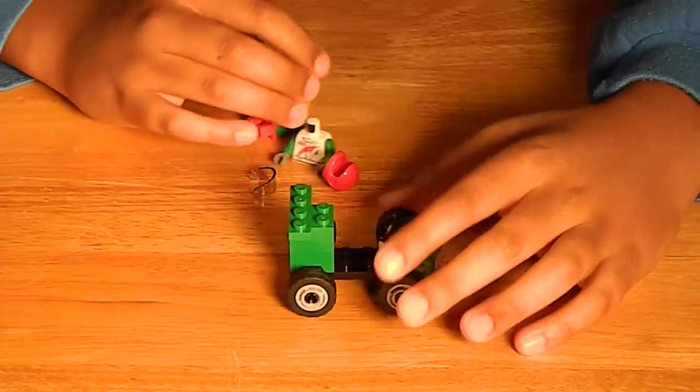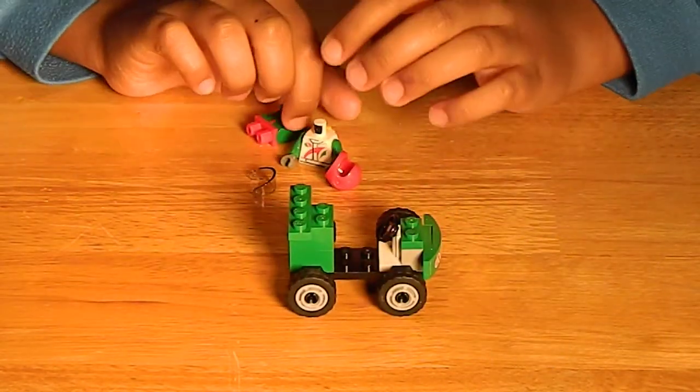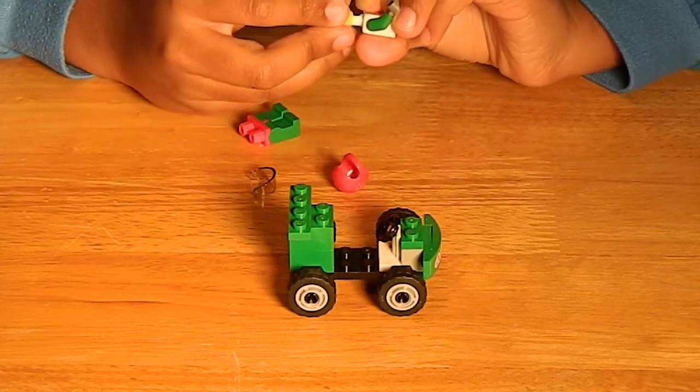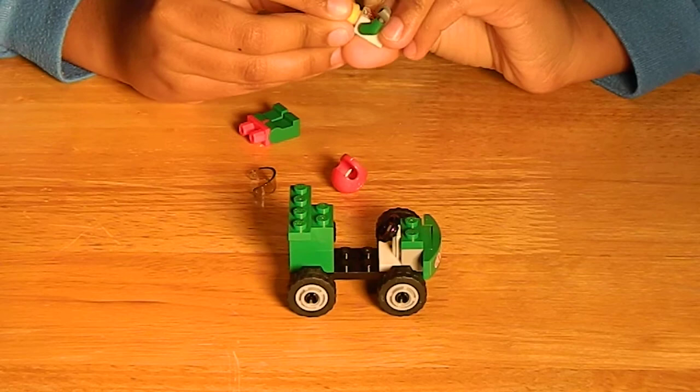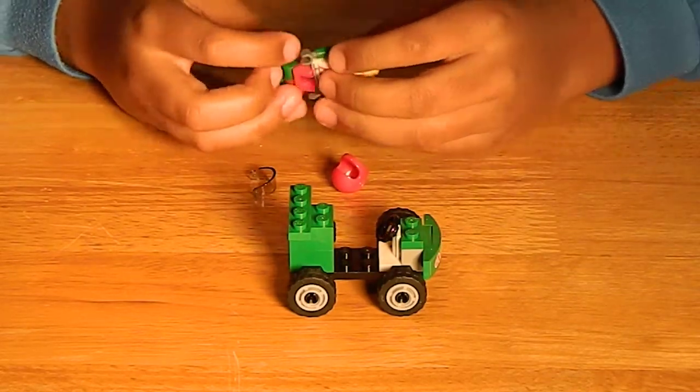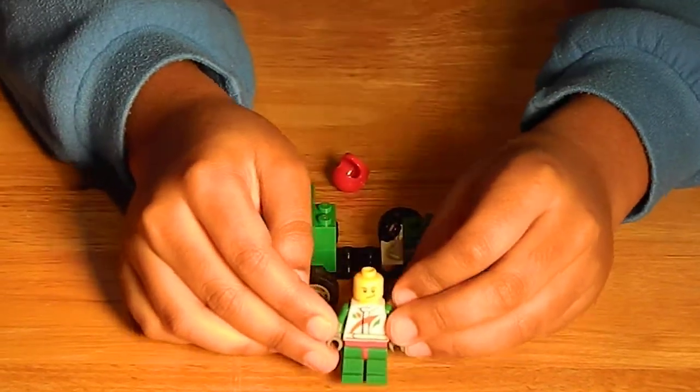And there you have your go-kart! Now we need to make the LEGO minifigure. Like this, put his head like so, and then put down the legs like that.